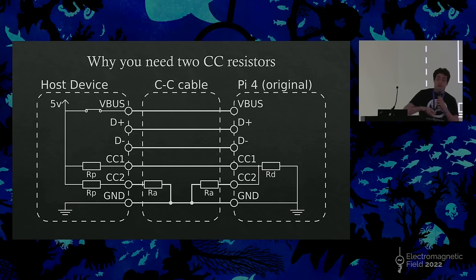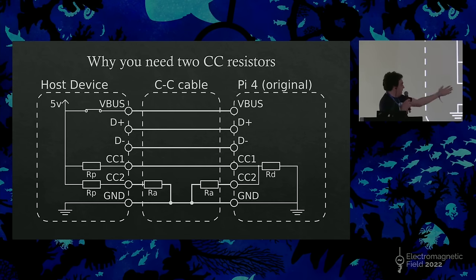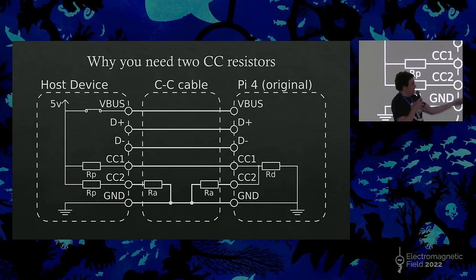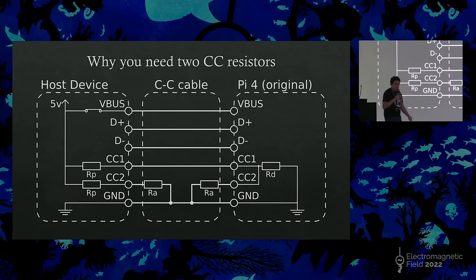However, there are also cables that have internal pull-down resistors. This, as we'll get onto later, these cables are used to signify, these are smart cables that can state their capabilities. You need this if you're dealing with Thunderbolt, USB 3, or the other high-power protocols, because the host needs to go, not only does the device at the other end support it, but does the cable support it? So you have these pull-down resistors. So the host sees on its CC2 pin, I have an RA pull-down. And on the other CC pin, it sees a combination of RD and RA.